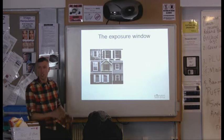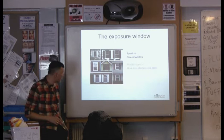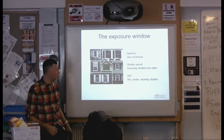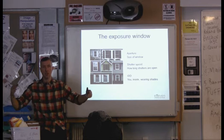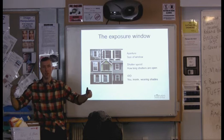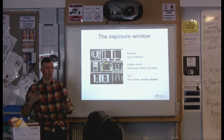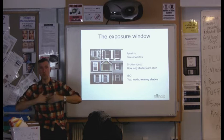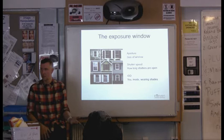A more appropriate way to describe this: imagine a window in a building with shutters that don't let any light in. The aperture is the size of the window. The shutter speed is how long you leave the shutters open. And the film speed is you inside wearing sunglasses. Wearing sunglasses means you're desensitised to light, so it takes a while to adjust to what's going on outside. Your choices are: leave the shutters open longer - your eyes will eventually adjust but things will be blurry; get a bigger window so more light gets in; or take your sunglasses off, which is the equivalent of changing your film speed so you can see more light.